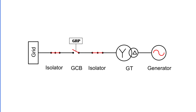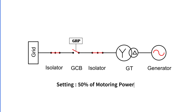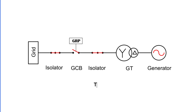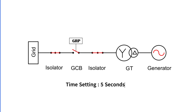The reverse power setting is typically less than 50% of the motoring power. For instance, if the motoring power of a steam turbine is 4%, the reverse power setting is kept below 2%. A time delay of around 5 seconds is applied to prevent false tripping due to synchronization disturbances or other transient conditions.